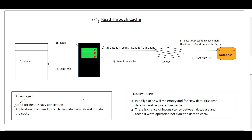The advantages of Read Through Cache: it is good for read-heavy applications and the application is not overloaded, because the application does not need to fetch data from the database — that is handled by the cache itself. The disadvantages: the first time new data is requested, it will not be in the cache, so it fetches from the database and caches it for subsequent requests. Also, if a equals 5 in the cache with a TTL of one minute and the database is updated to 7 before that TTL expires, it could serve stale data.